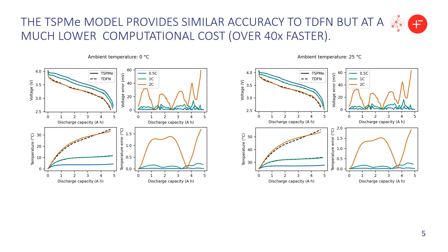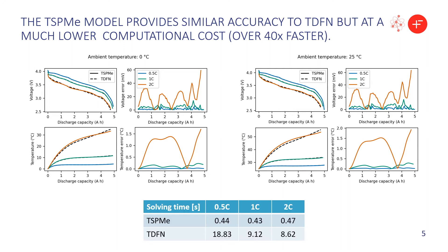When we bring the ambient temperature down to zero degrees Celsius, again we see pretty good agreement between the two models. In terms of computational time, there is a significant speedup when using the TSPME. You can see the times for different C-rates, and the TSPME is significantly faster — in the case of 0.5C, it's over 40 times faster than the TDFN. So that's a significant speedup, especially when we need to run many computations in a row.